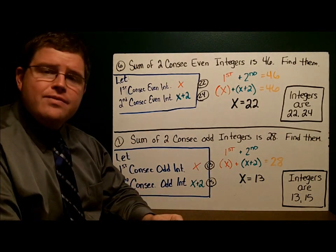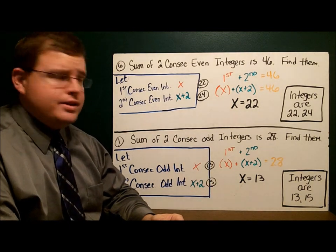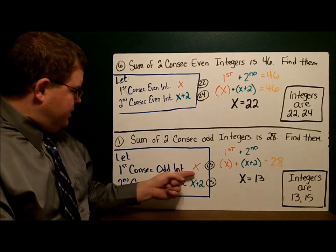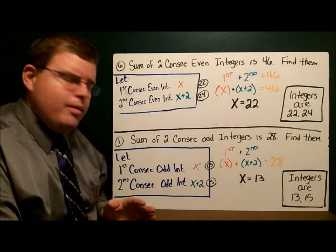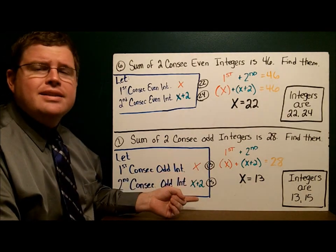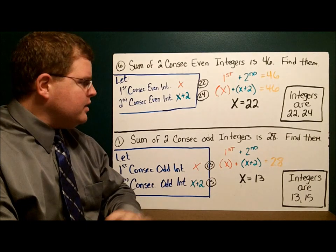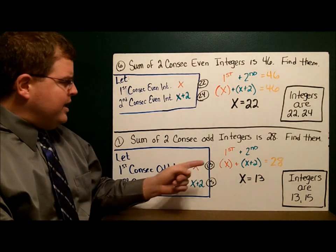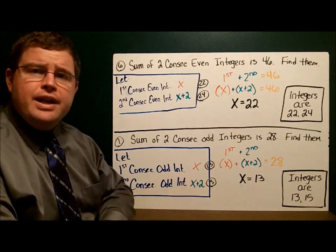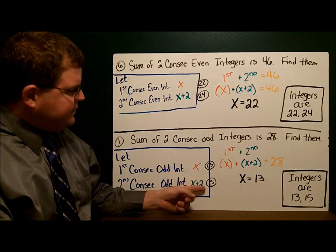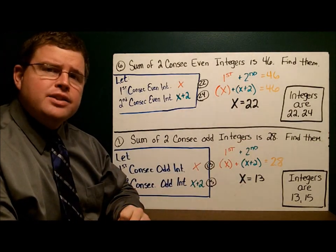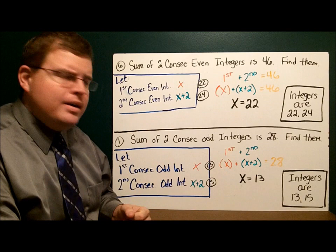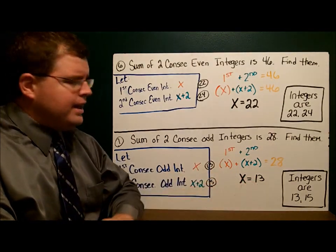On number seven, we have the sum of two consecutive odd integers, and their sum is 28. Again, my let statement sets it up: the first one is x, the second one is x plus two. So x plus x plus two equals 28. Solving, x equals 13, which means I have 13 and 15. Let's check: 15 plus 13 is 28 — yes, that's good. Are they odd? Yes. Are they consecutive? Yes. My integers are 13 and 15.